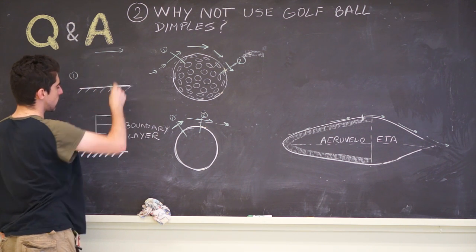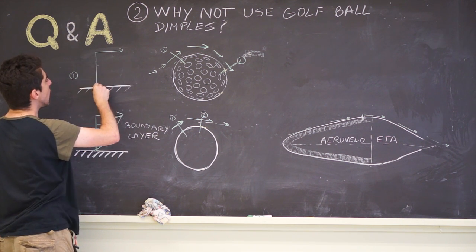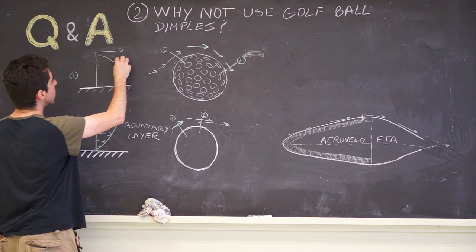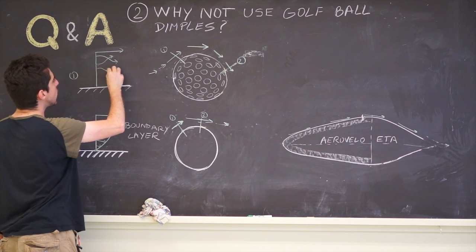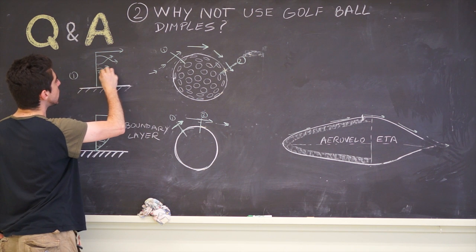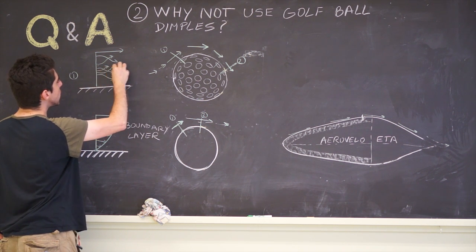And this is how the boundary layer is going to look. The free stream velocity is the same as before. But now we have faster air getting closer to the object, slower air going further, and just all sorts of air mixing.